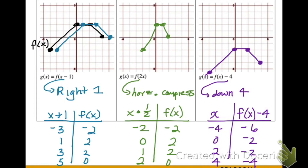We need to make sure we're able to apply these transformations to the right coordinates, using our knowledge to graph these equations appropriately. The cool thing about transformations is that they will work for any of our parent functions. It doesn't matter if it's a quadratic, an absolute value, or a square root — if I have a subtract four on the outside of the function, it's still going to shift it down four, no matter the shape.